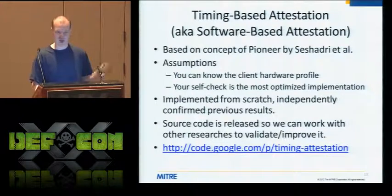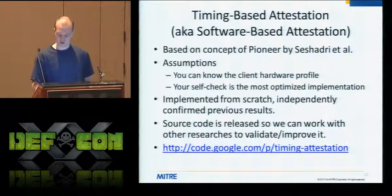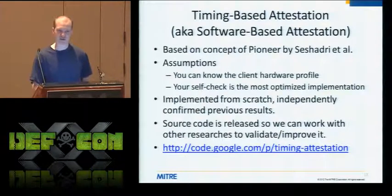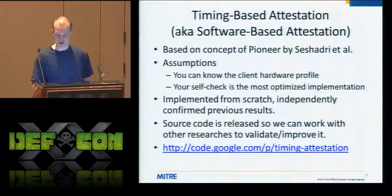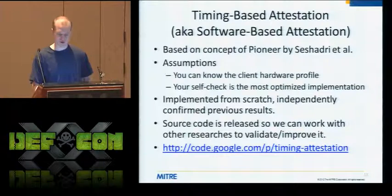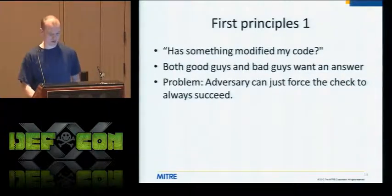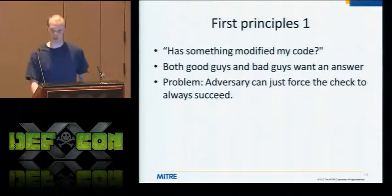We independently recreated this work to confirm that the academic paper actually does what it says it does, because you can't always believe that. Importantly, the source code is available. As we go through this, if you're thinking 'what if I do this or that,' you can actually go do it — you can try to write the assembly more optimized than us and prove that you can compromise it. With that, I want Corey to start talking about the design.